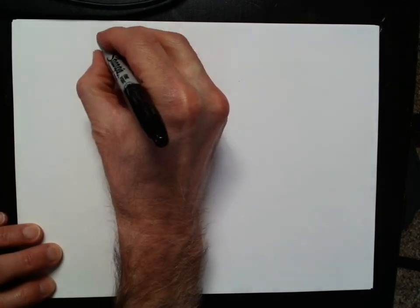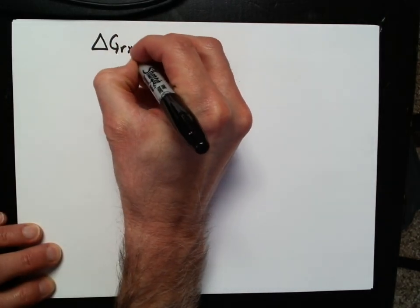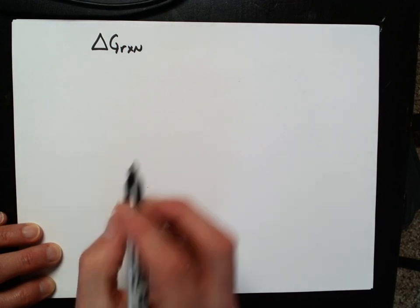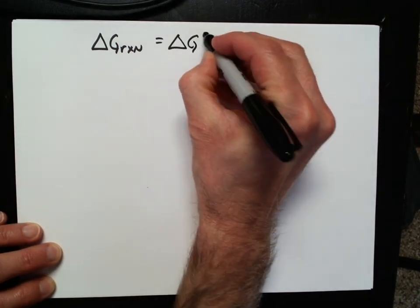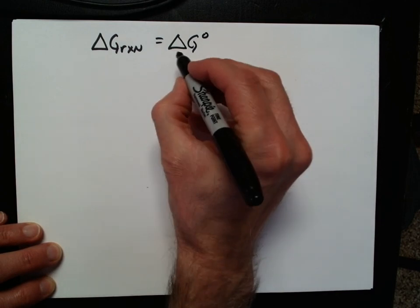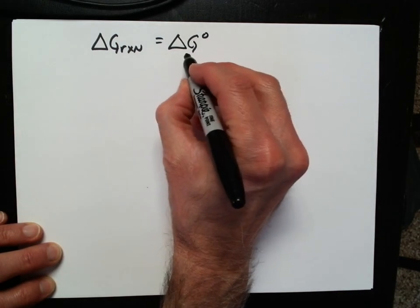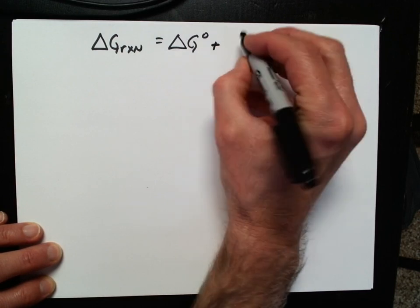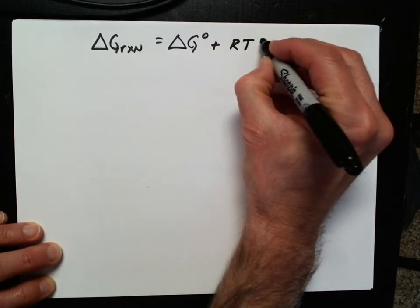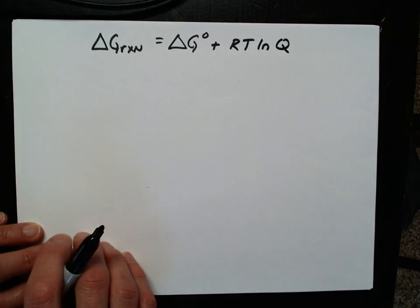Let's start with our new equation. The delta G for any reaction under any conditions is going to be the standard Gibbs energy for that reaction — one bar pressure, 298 Kelvin, one molar concentration of all reactants — and we add to that RT times the natural log of the Q ratio for the reaction.